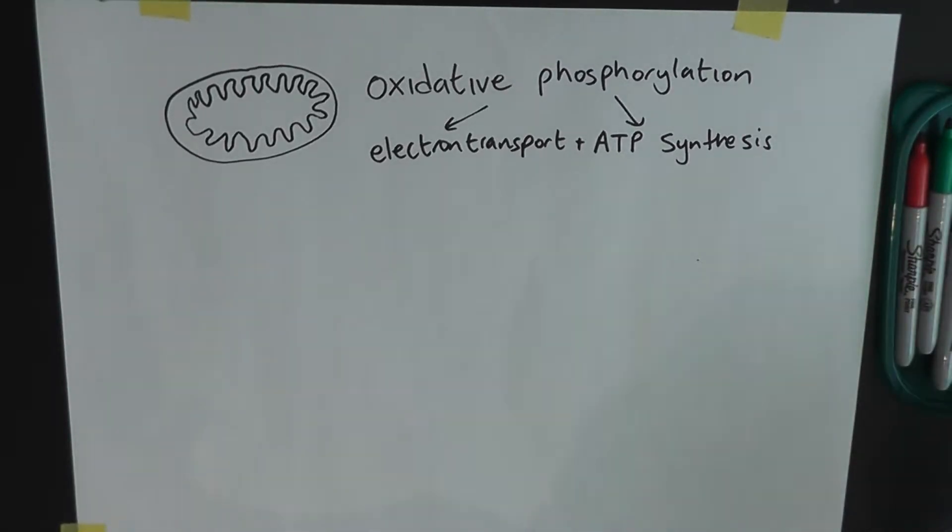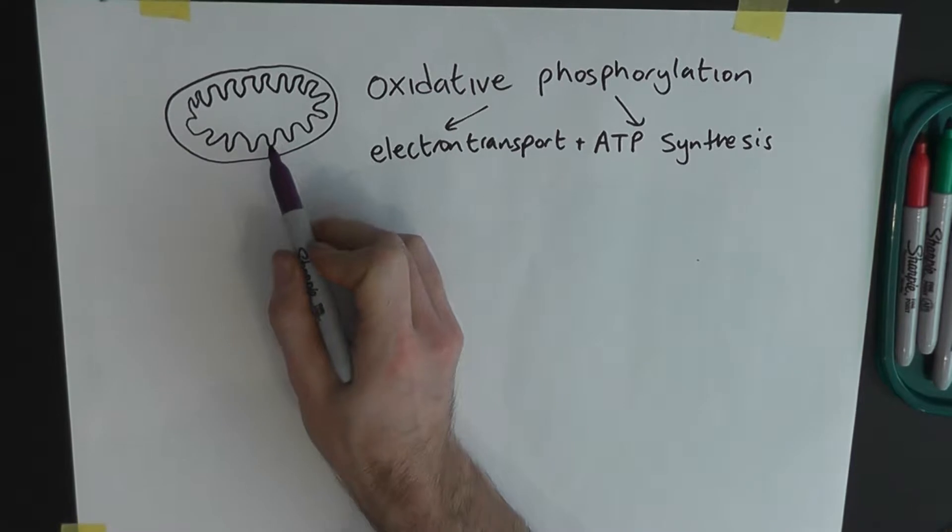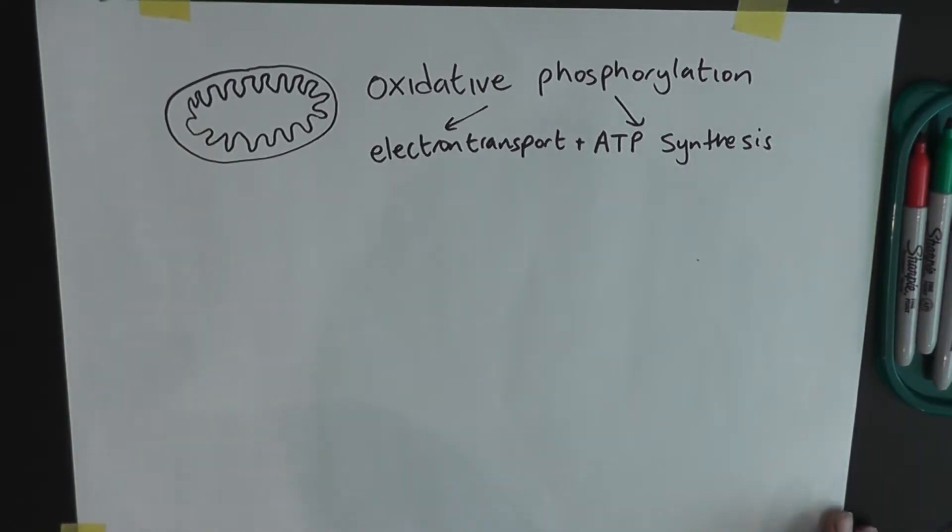Hello, I'm Liam Carr and now I'm going to explain the final stage of aerobic respiration and that's oxidative phosphorylation, which happens on these cristae in the mitochondria inside cells.